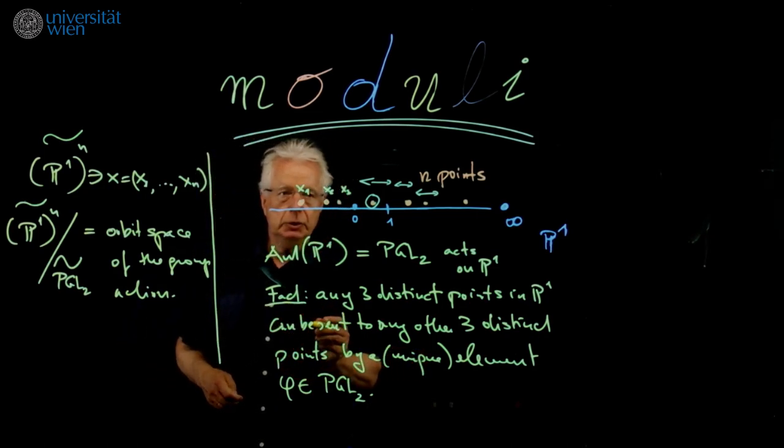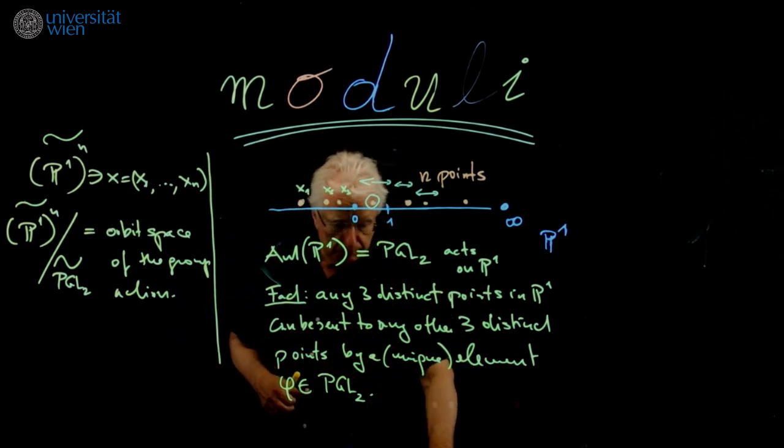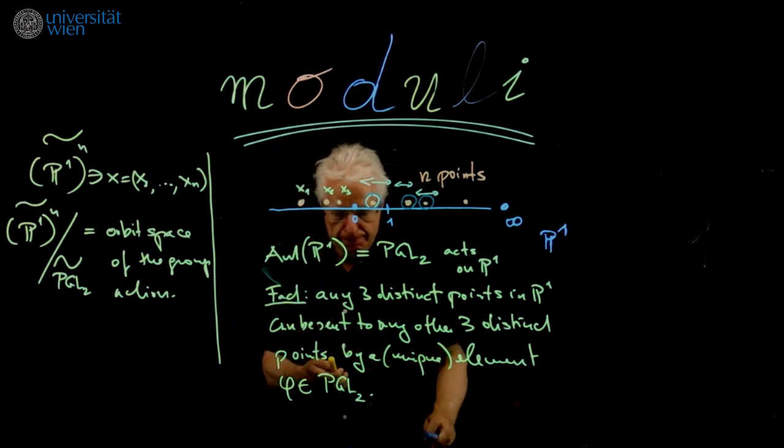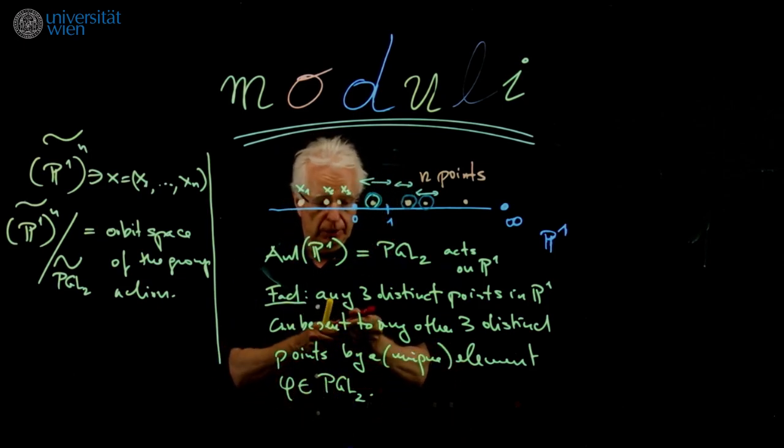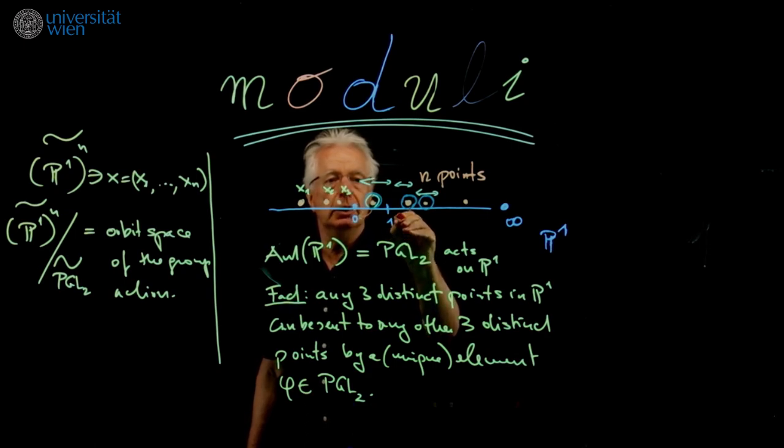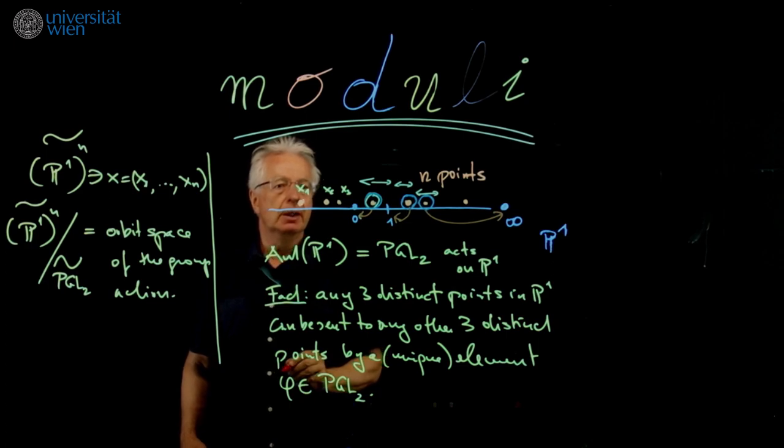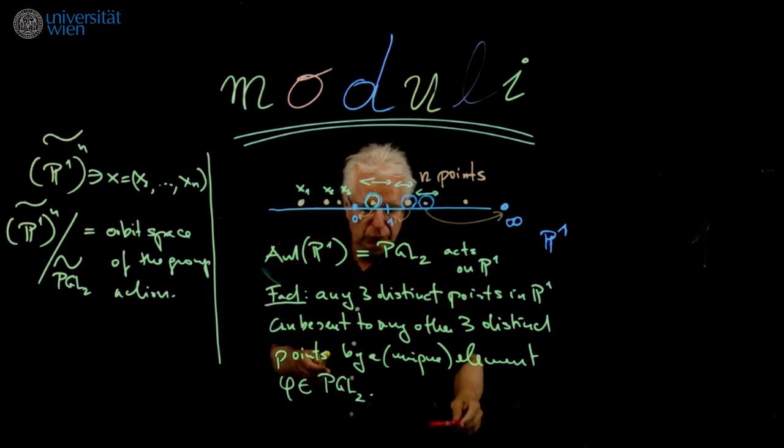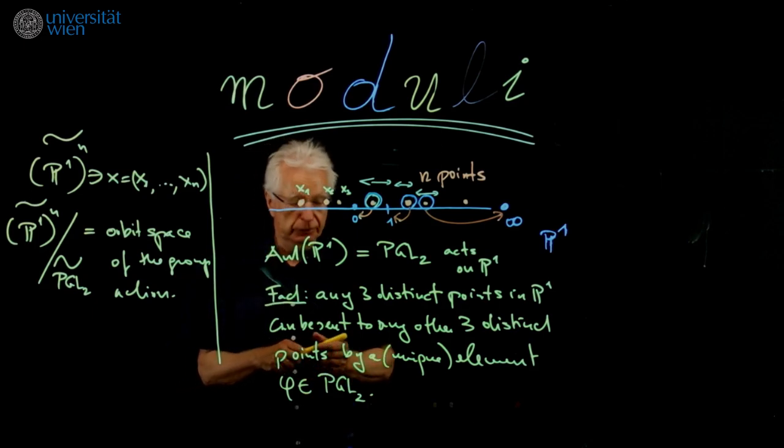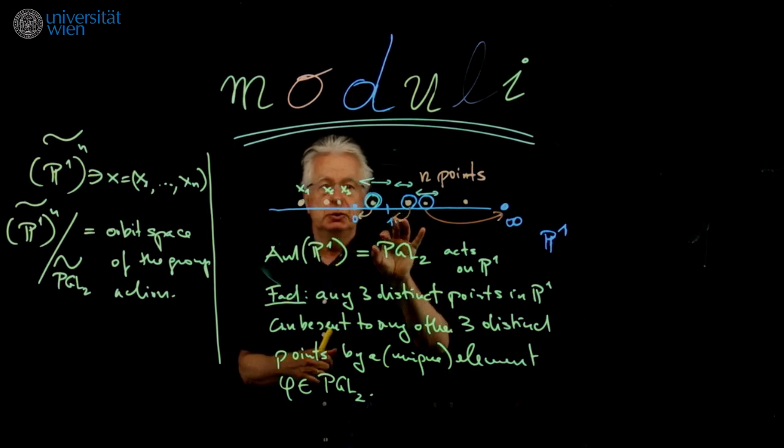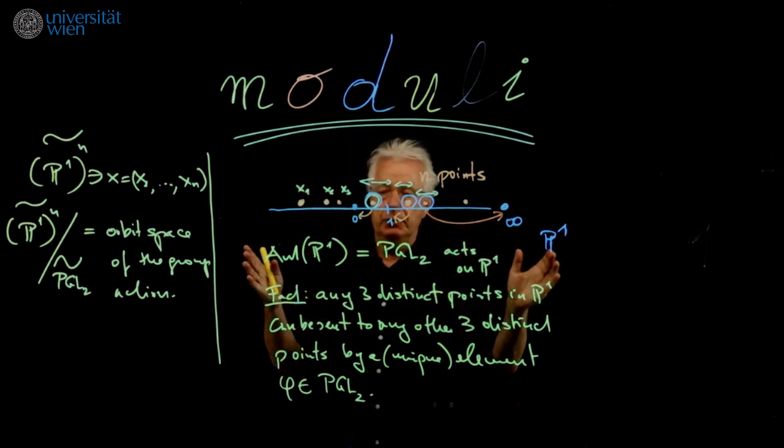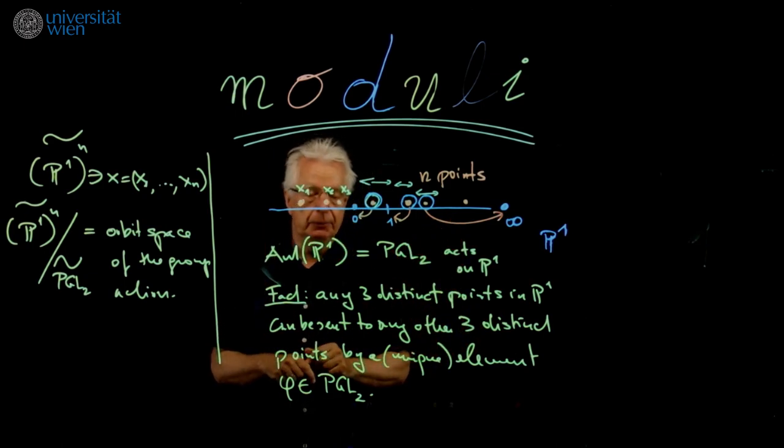So let me write a tilde here to indicate that all the entries are distinct: x1 different from x2, x1 different from x3, and so on. Otherwise, this fact does not work. And then it's not very hard to show, what you do is you move the three selected points. Let me take these three selected points here. You move them to special positions. You move the first one with the PGL2 action to 0, the second one to the point 1, and the last one to infinity. And then the other points, x4, x5, x6, they have a fixed position. This will be a distinguished representative of our orbit.